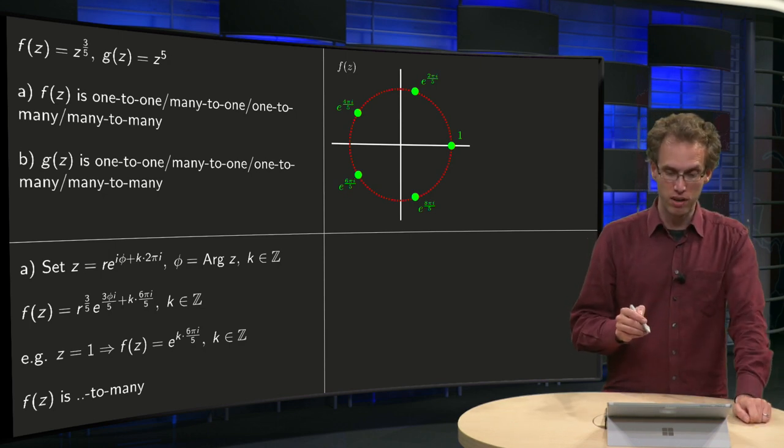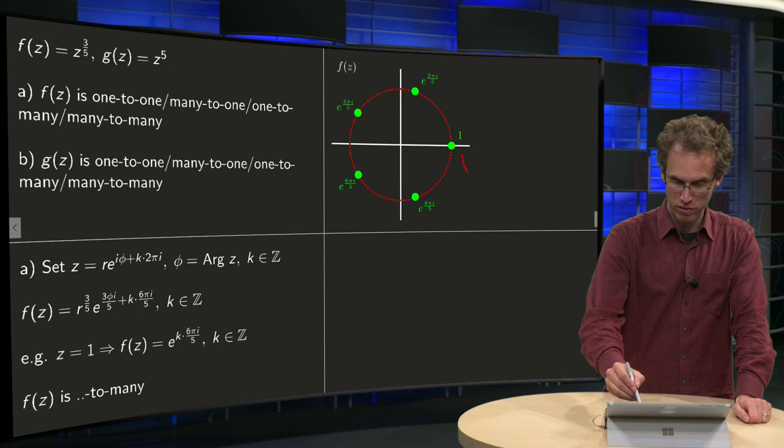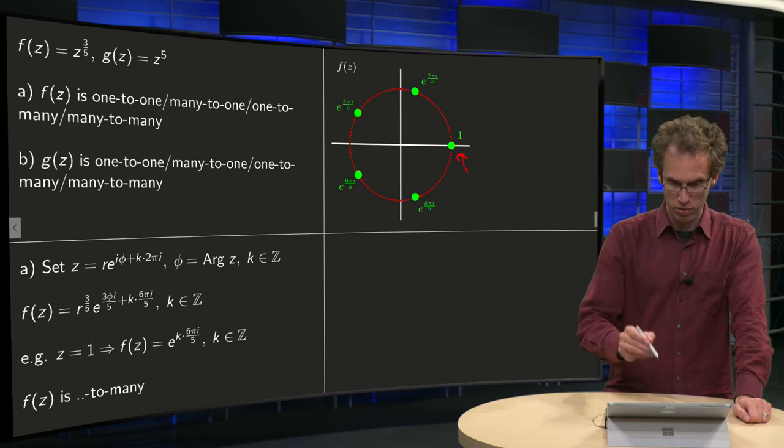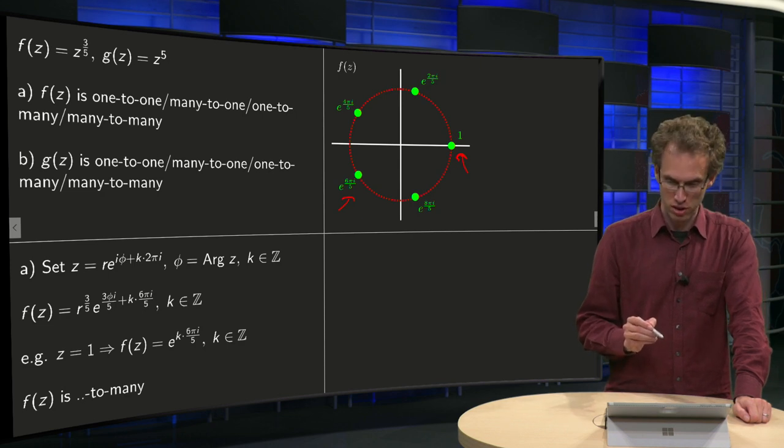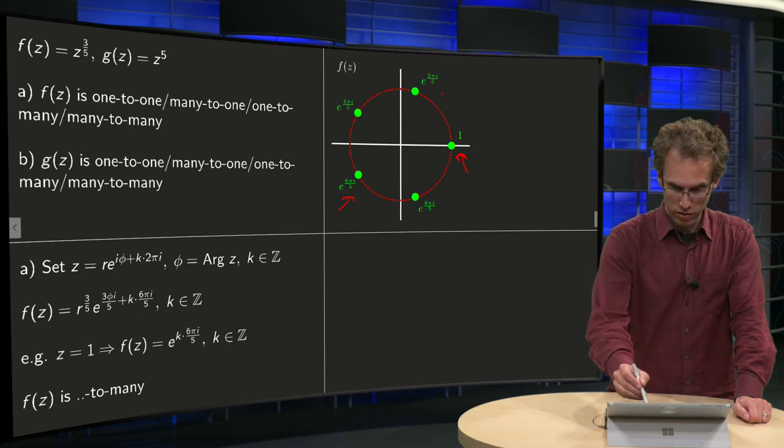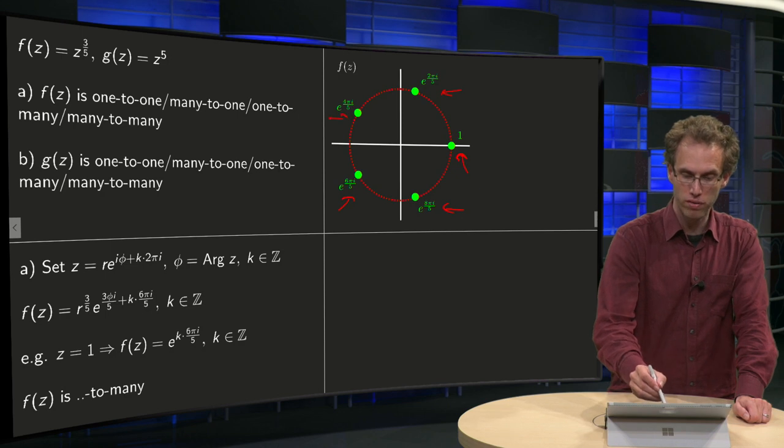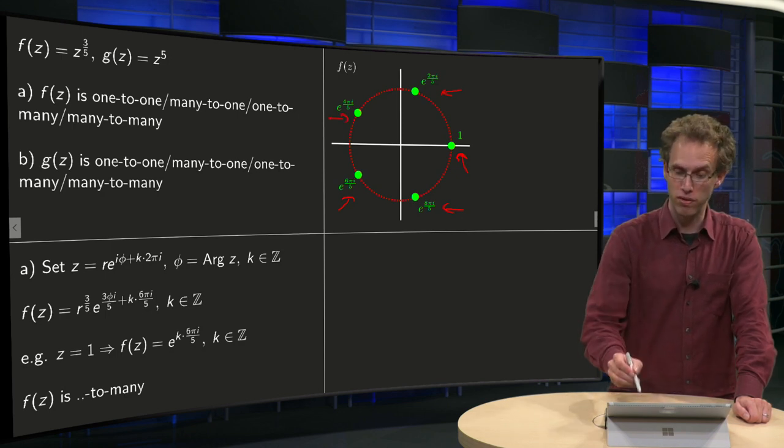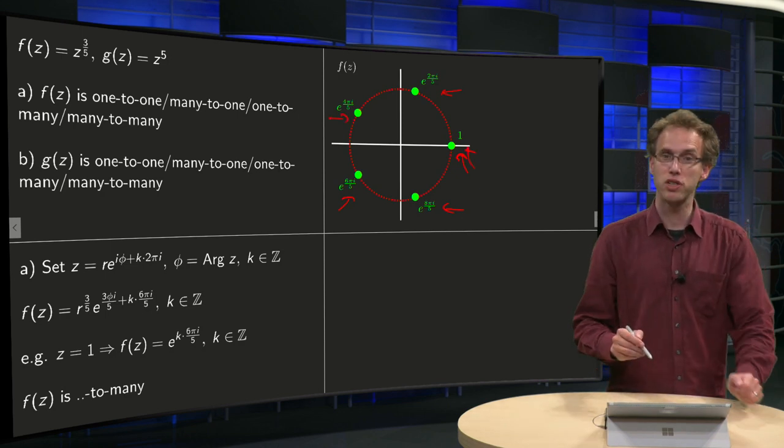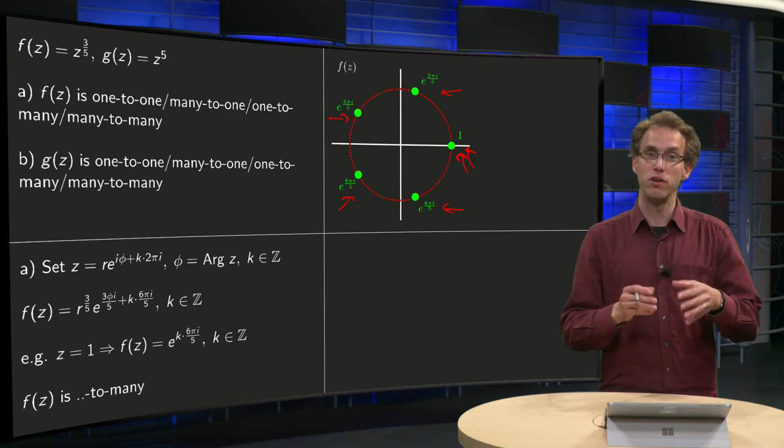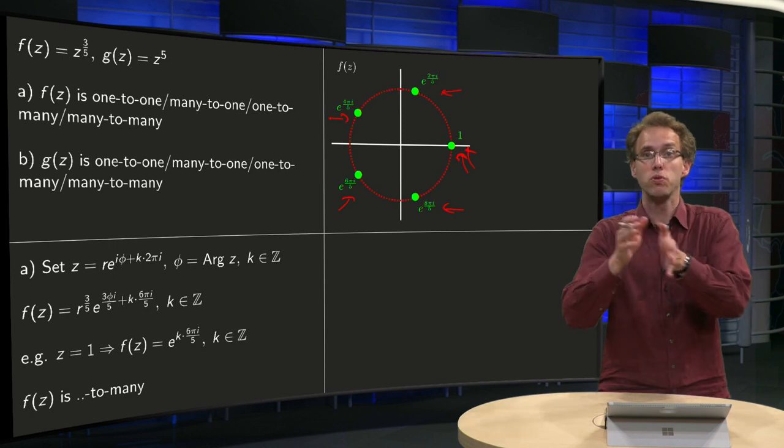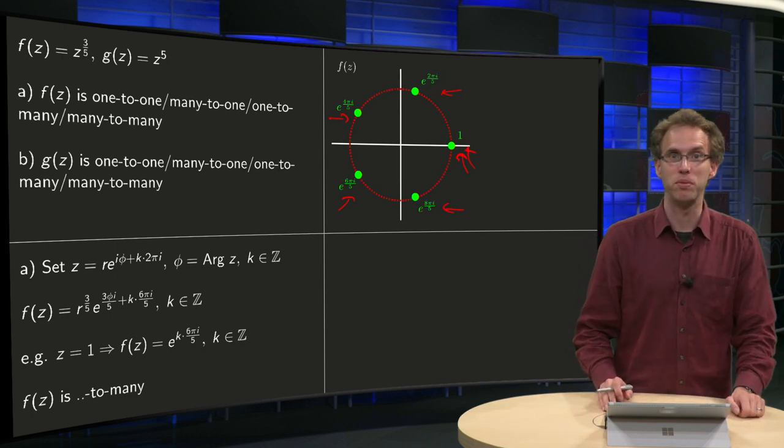So for k equals zero you find this value over here, for k equals one you get this value over here, for k equals two you get this value over here, for k equals three you get over here, and if you take k equals five you are back at one again. So you see we get one, two, three, four, five different values. So the function f of z is to five.